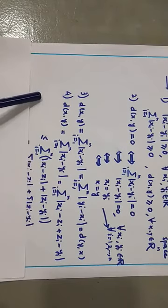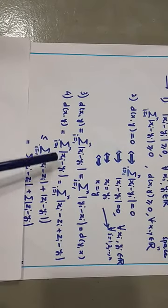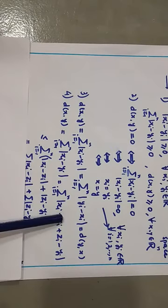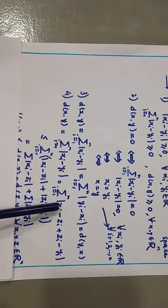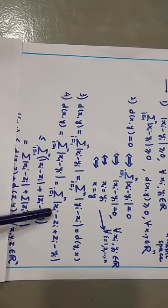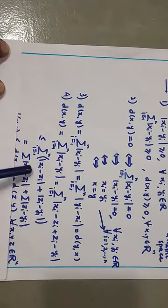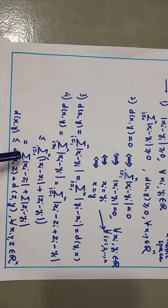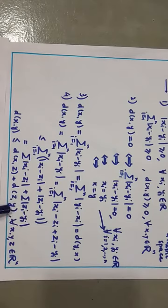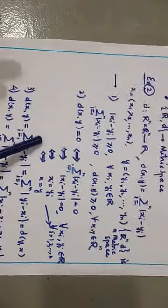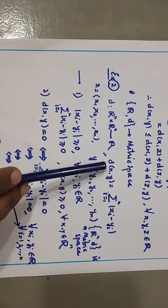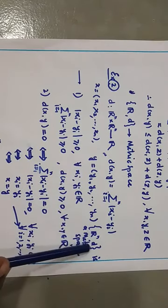For the fourth triangular inequality: D(x,y) = Σ|xᵢ − yᵢ|. Adding and subtracting zᵢ inside the modulus and applying the triangular inequality of absolute values, we get Σ|xᵢ − yᵢ| ≤ Σ|xᵢ − zᵢ| + Σ|zᵢ − yᵢ|. Separating the summations, the first is D(x,z) and the second is D(z,y). So D(x,y) ≤ D(x,z) + D(z,y) for all vectors x, y, z ∈ ℝⁿ. All four conditions are satisfied, hence ℝⁿ with this metric is a metric space. Thank you.